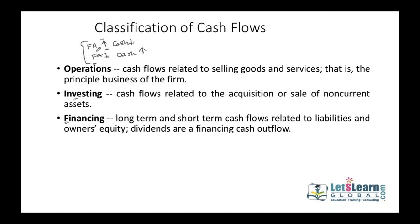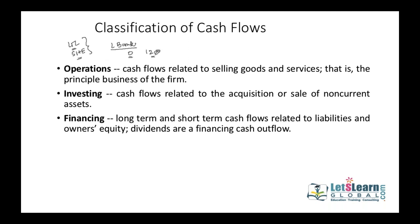For financing activities, we observe long-term liabilities plus shareholders' equity from the balance sheet. If a long-term liability like a bank loan increases — say from nothing last year to 1.2 million this year — it means we borrowed money, so cash comes in as an inflow. Issuance of share capital, bonds, and loans are inflows. When you pay them off — say a loan decreases from 1.3 million to 1.2 million, meaning you paid off 100,000 — that is an outflow. Any changes in long-term liabilities and shareholders' equity are presented under financing activities.